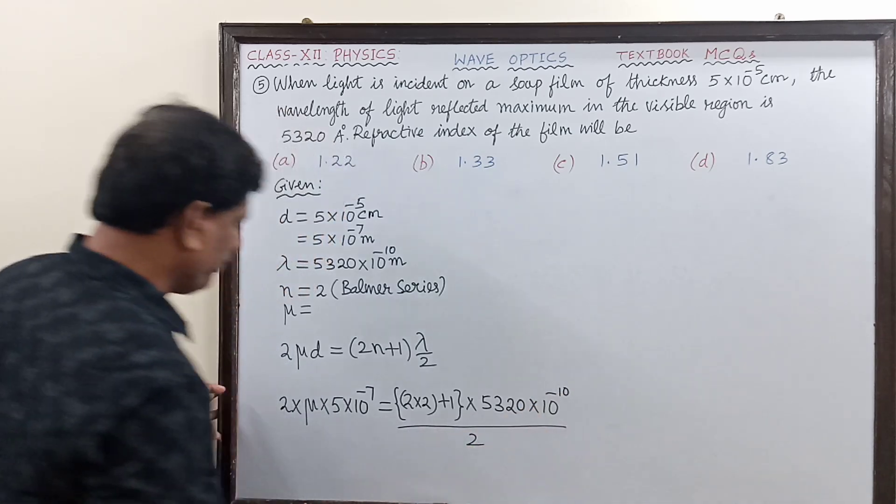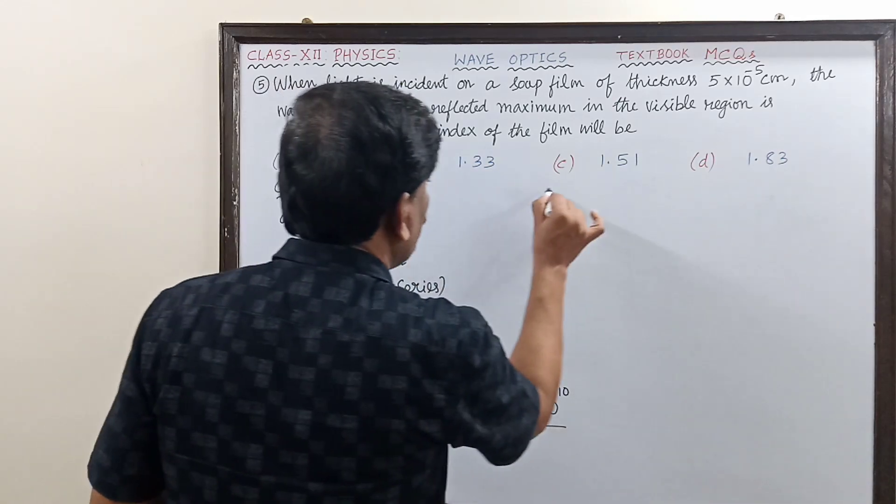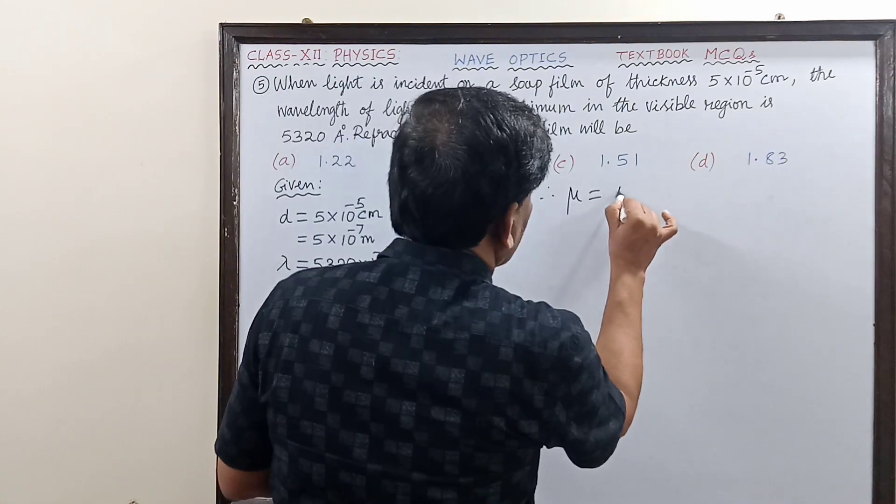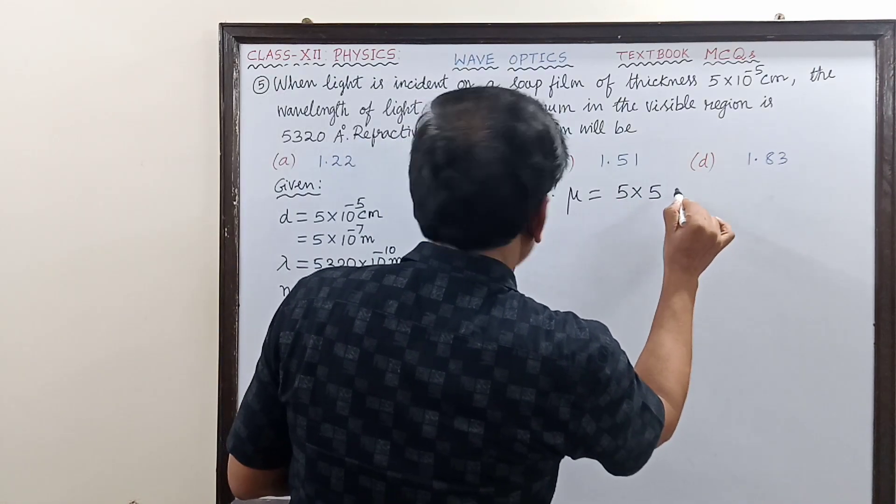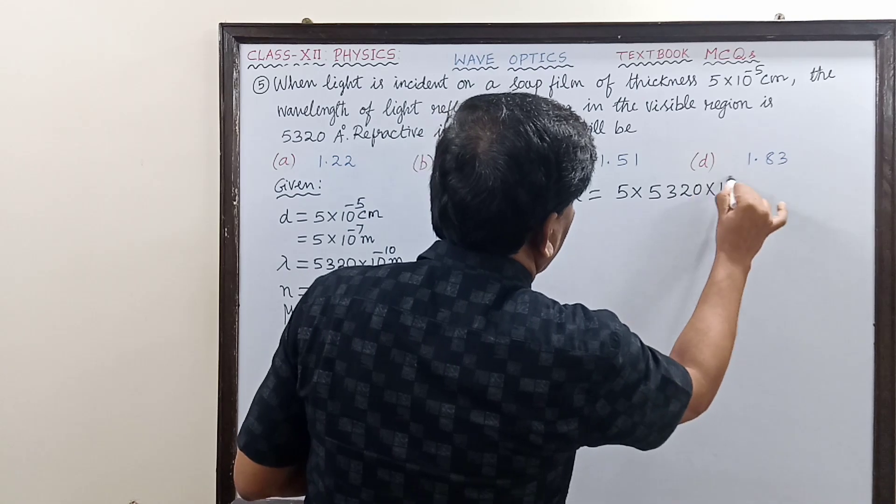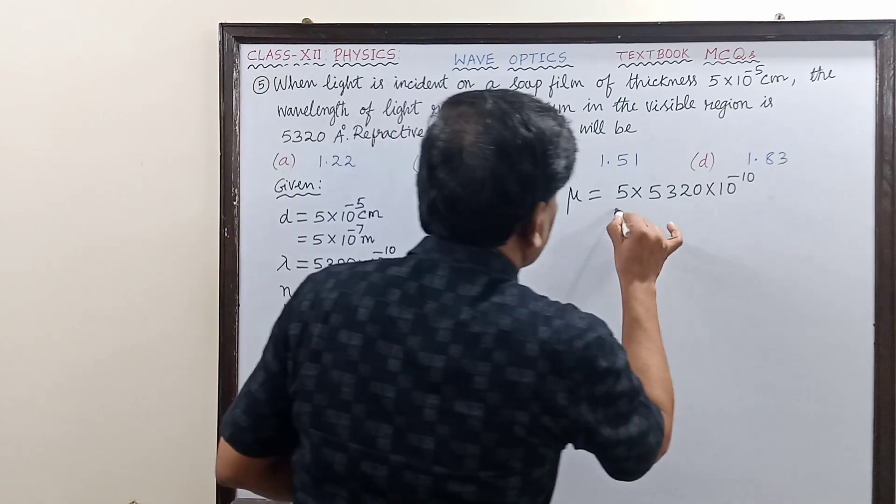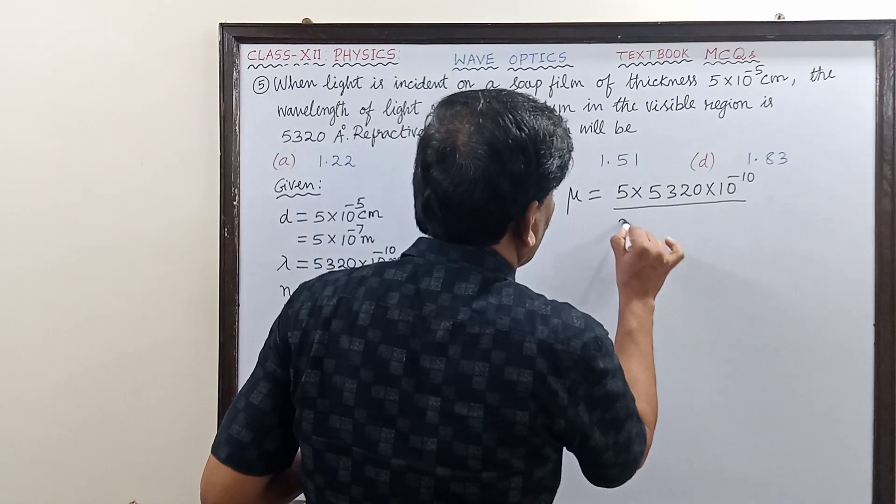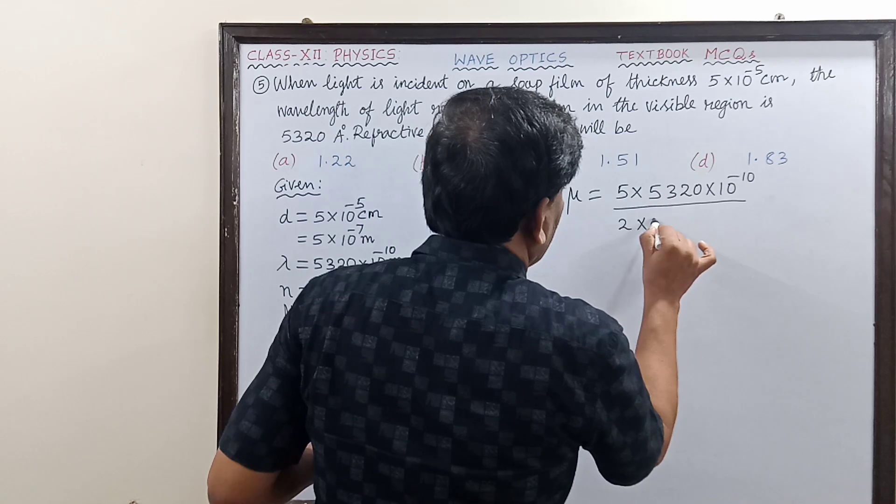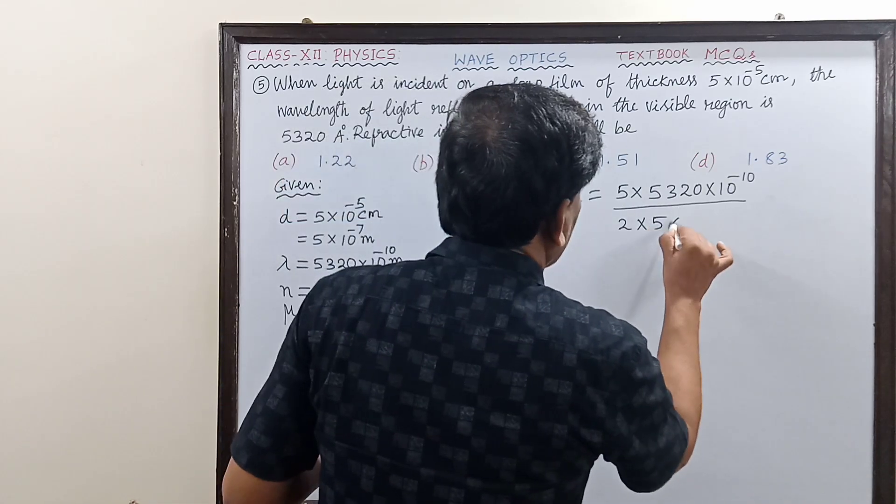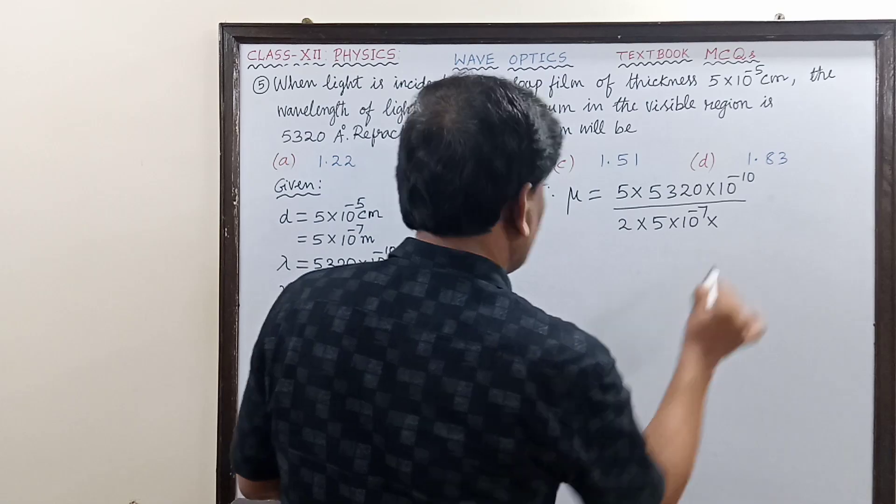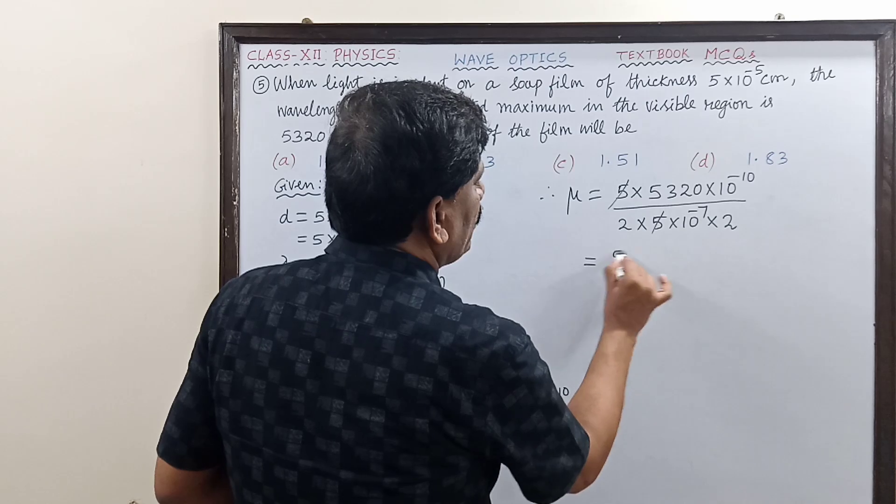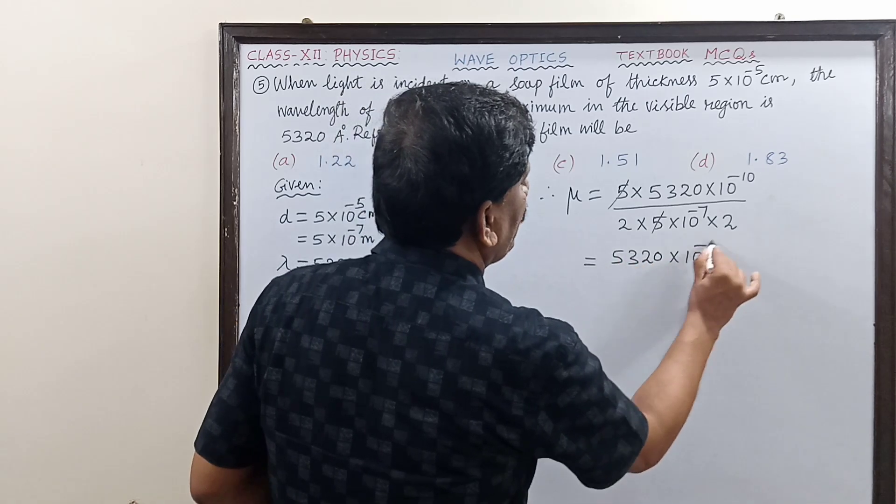We need only μ, therefore the refractive index μ = 5×5320×10⁻¹⁰ divided by (4×5×10⁻⁷).